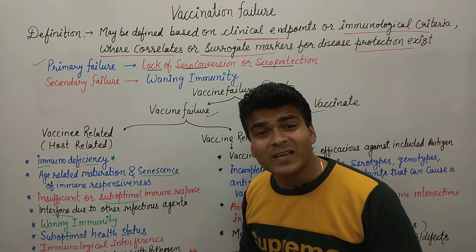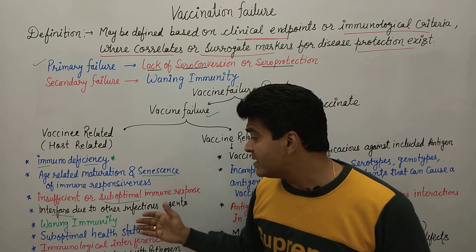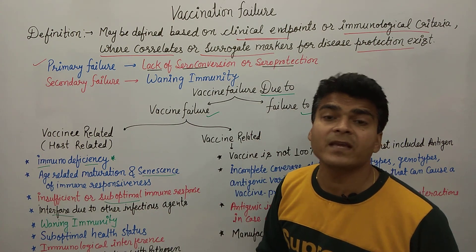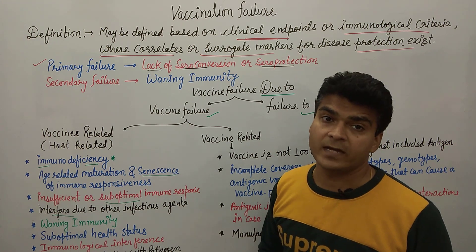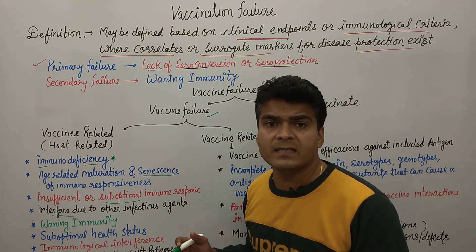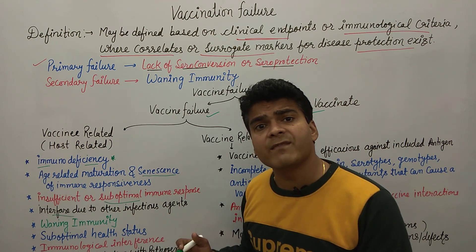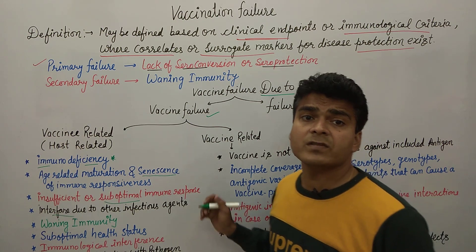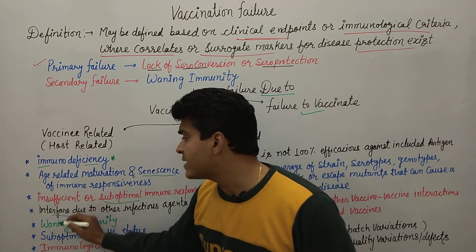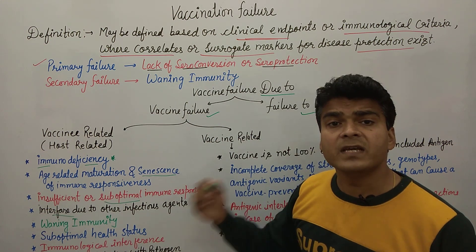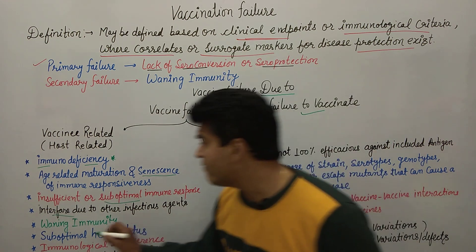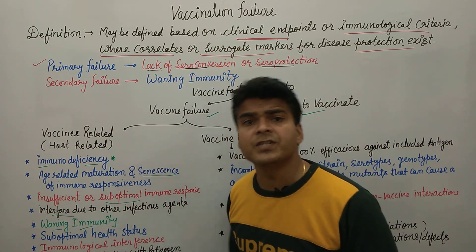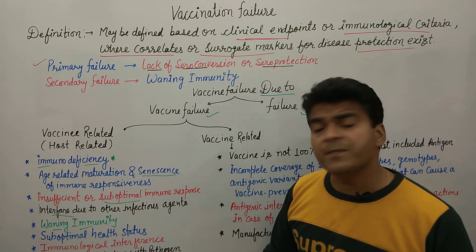Then interference due to other infectious agents — what could happen is that a vaccinated person also has an infection from another infectious agent and that causes interference. Suppose a person was given a vaccine against a disease but already has another disease — in that case, the existing bacteria can interfere with the vaccine given. And waning immunity — immunity is decreasing — this is also a reason for vaccination failure.